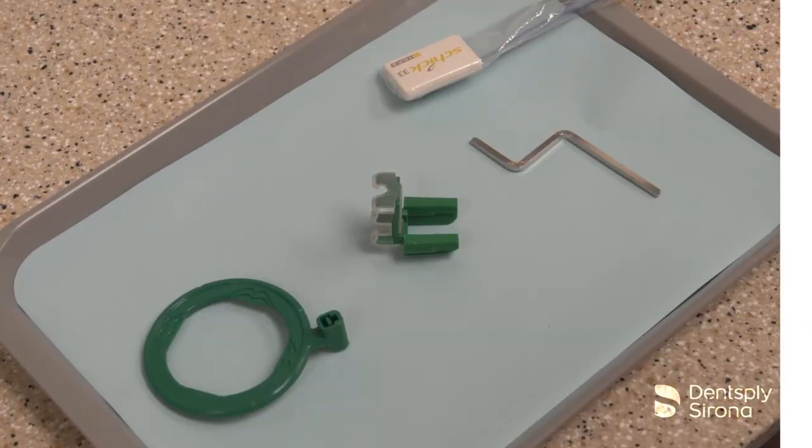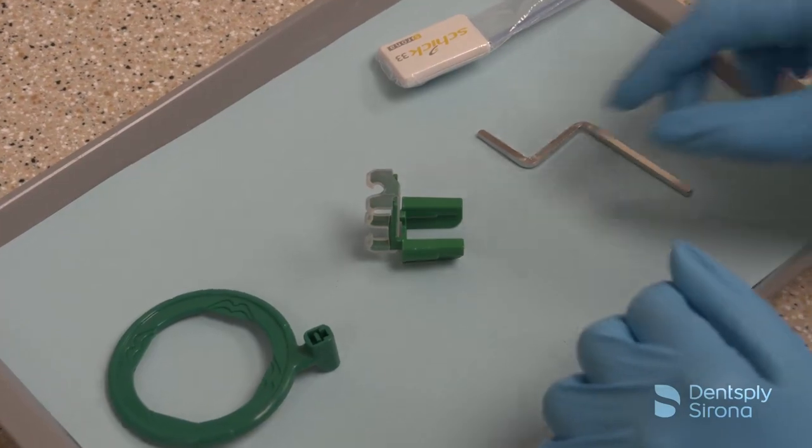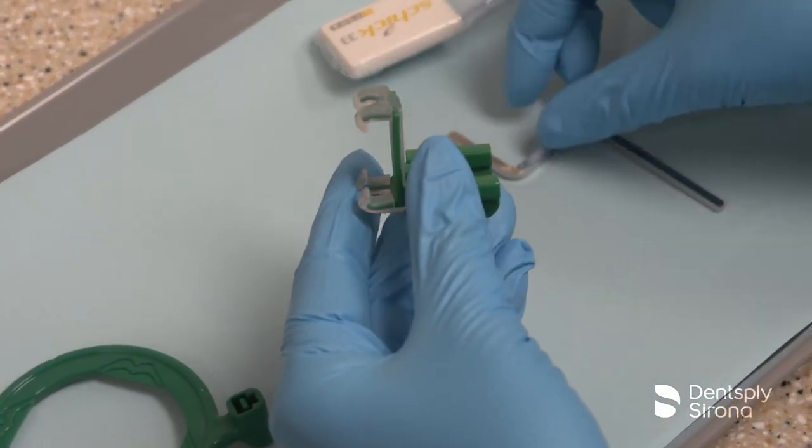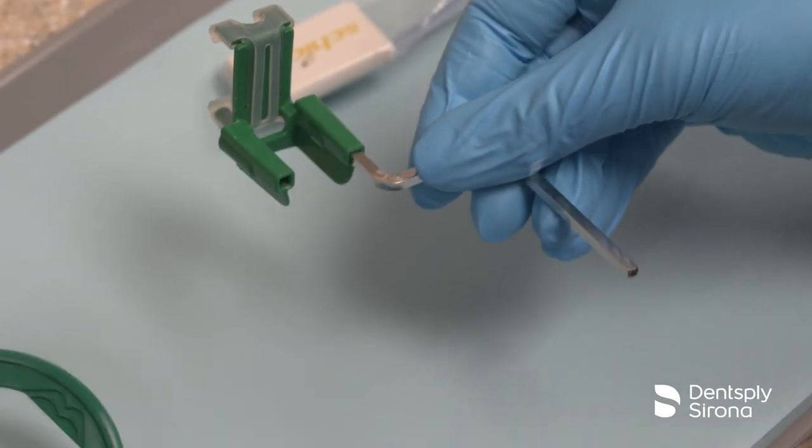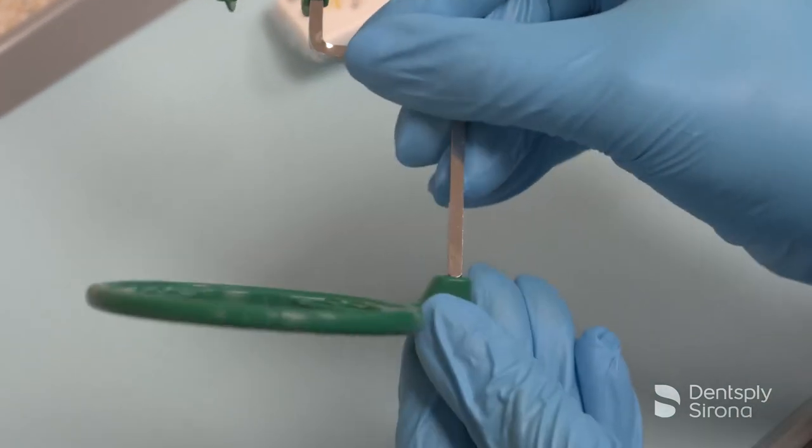To assemble the XCP short arm with the XCP-DS-FIT endo bite block for endodontic images, place the metal arm into the front tab of the green bite block. Slide the arm into the green aiming ring.